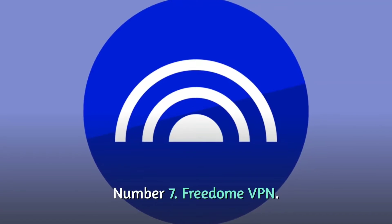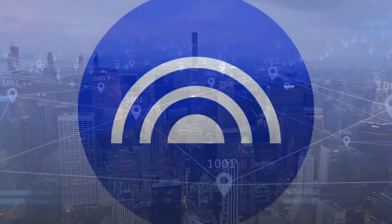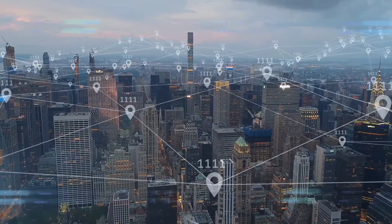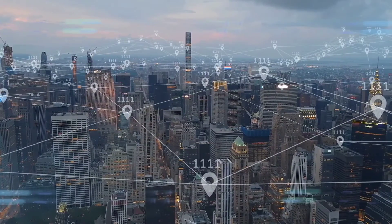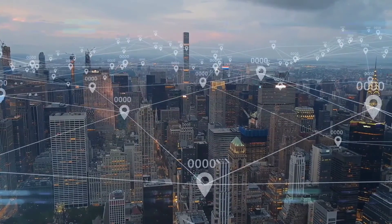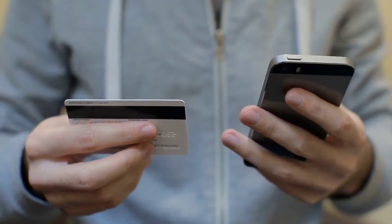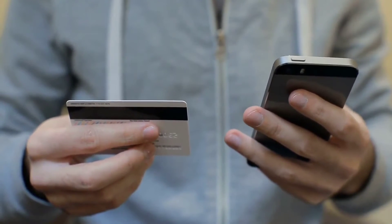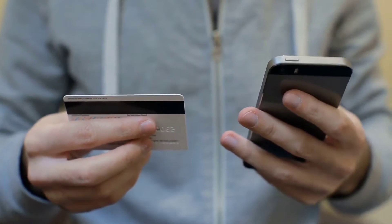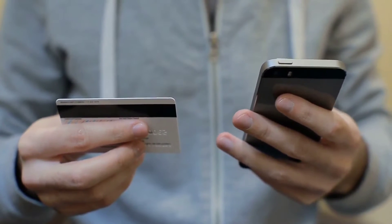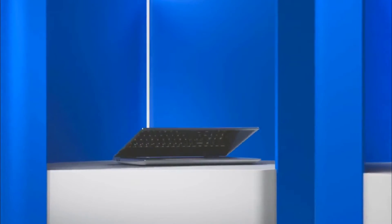Number 7: FreedomVPN. By moving your IP address to a different place, Freedom conceals your IP address. Online banking, e-commerce transactions, taxes, surfing, and streaming are all secured using this program. It also allows you to view geo-restricted material.